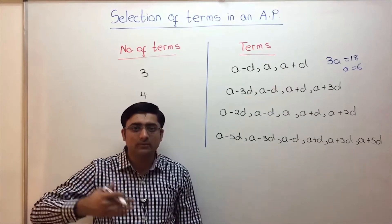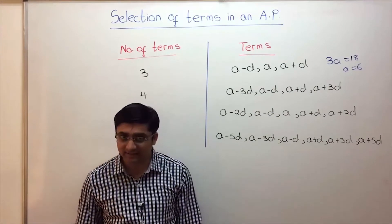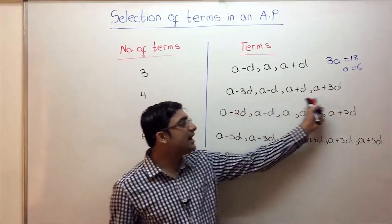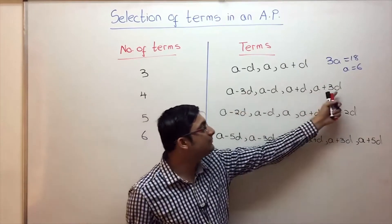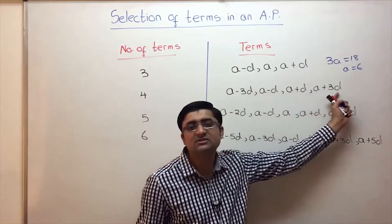Otherwise if you take normal A, A plus D, A plus 2D, calculations become really lengthy. Similarly here if you add all these terms, minus 3D plus 3D cancel, minus D plus D cancel. So sum of all these terms is 4A.